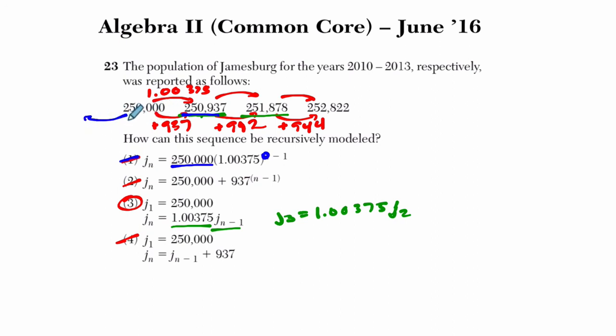Taking this number and dividing it by 1.00375 gives you another number that follows that pattern, but it's not modeling the sequence. The recursive pattern here specifically starts at 250,000, so you know it's not defined before that, and it defines this really well.